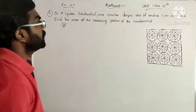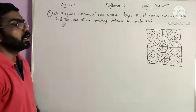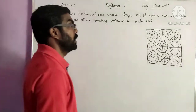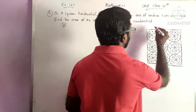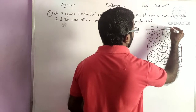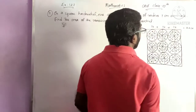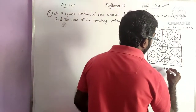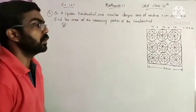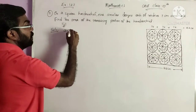On a handkerchief, 9 circular designs each of radius 7 cm are made. Find the area of the remaining portion of the handkerchief. Here the radius is 7 cm, so the diameter is 14. So 14 plus 14 plus 14 gives 42 cm. So 42 cm will be the length of the side of the square. Let A equal to 42 cm.